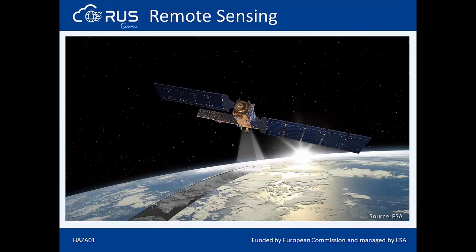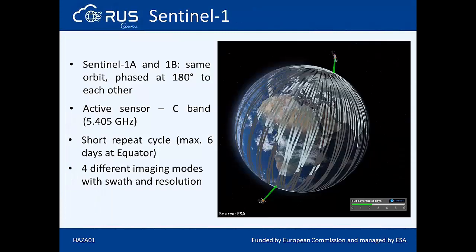As SAR does not depend on solar illumination or weather conditions, SAR remote sensing is quite relevant to monitor emergencies such as floods. For this exercise, we are going to use C-band Sentinel-1 SAR data provided by the Copernicus program. The Sentinel satellites are part of the space component of the Copernicus program of the European Union and the European Space Agency. Once completed, this program will be formed by six constellations of two satellites each, with a range of technologies from SAR to multispectral imaging. The data are freely available to any registered user.